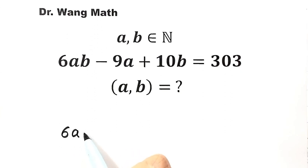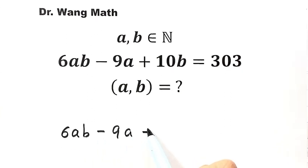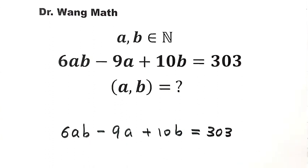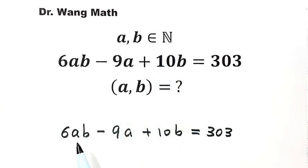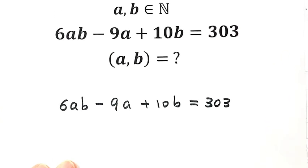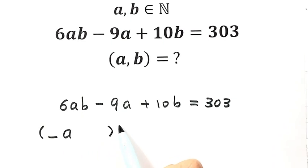6ab minus 9a plus 10b equals 303. Because a and b are positive integers, let's factor the left-hand side. Since we have 6ab, the first factor starts with a number times a, and the second factor starts with a number times b.